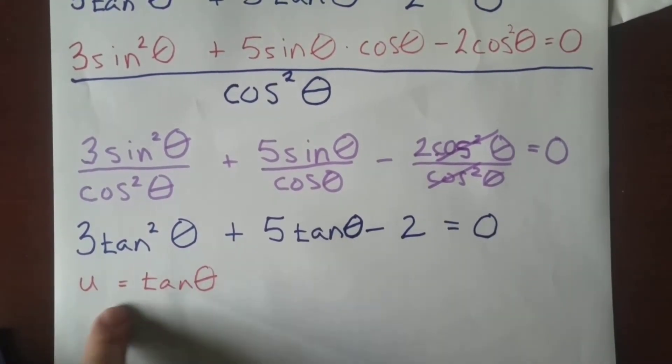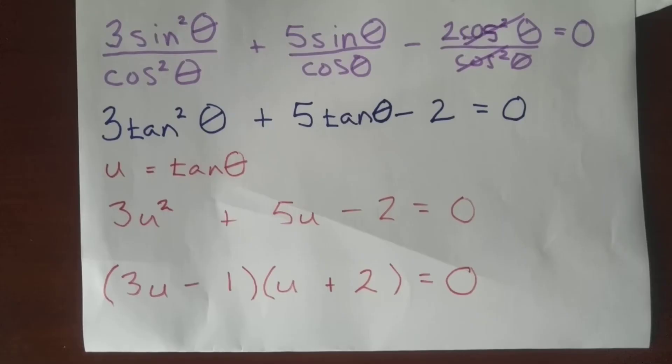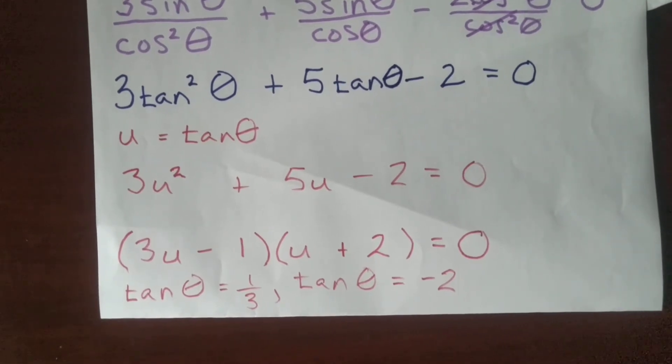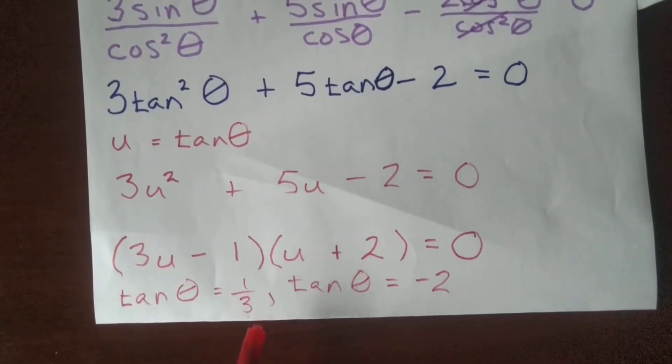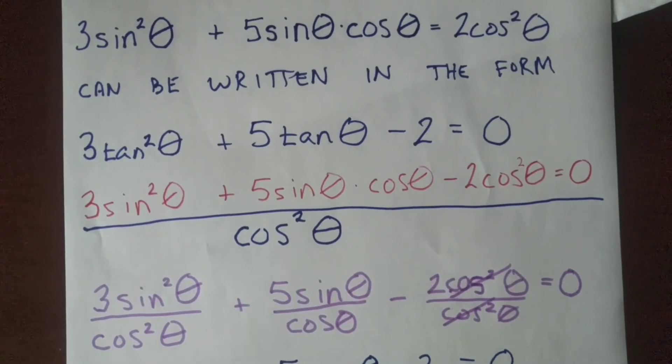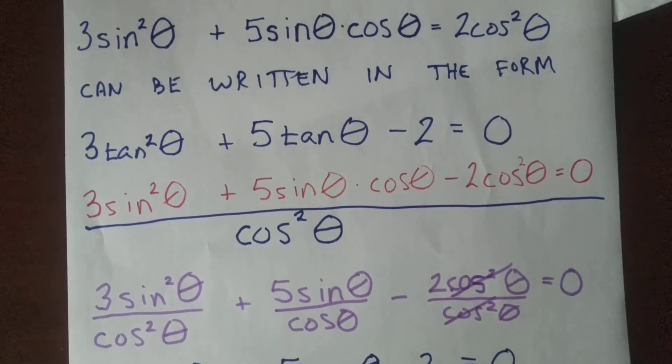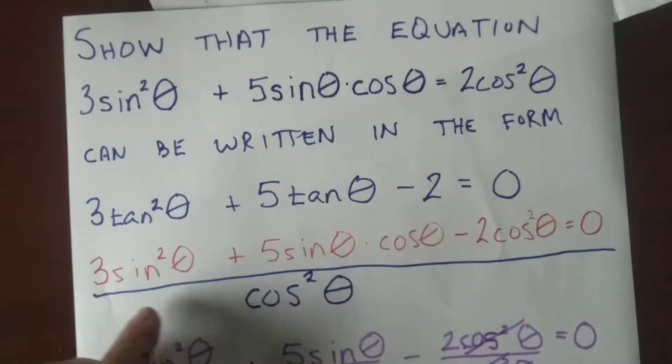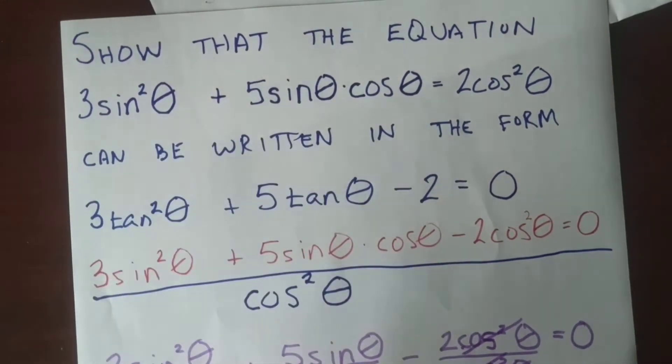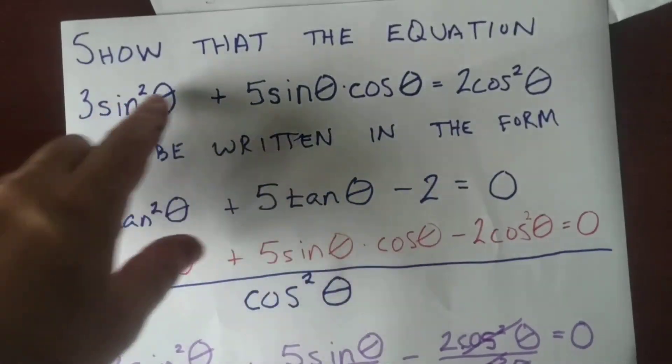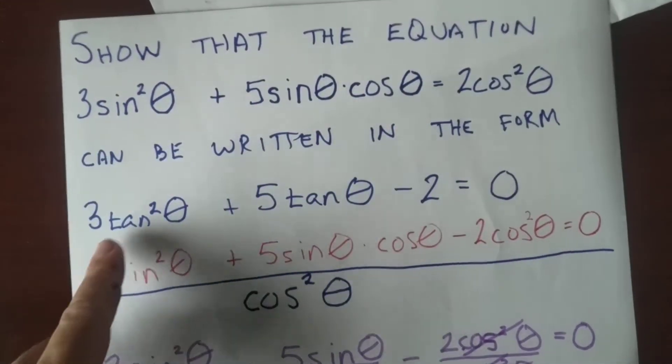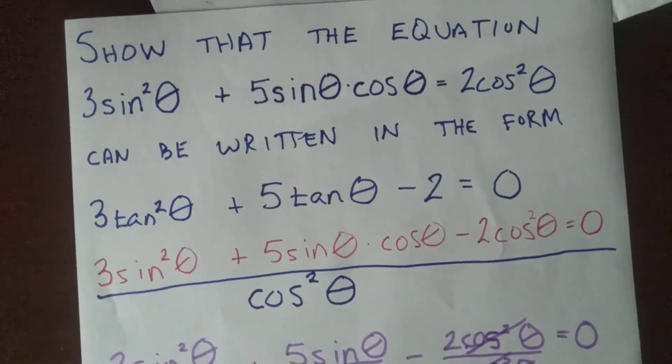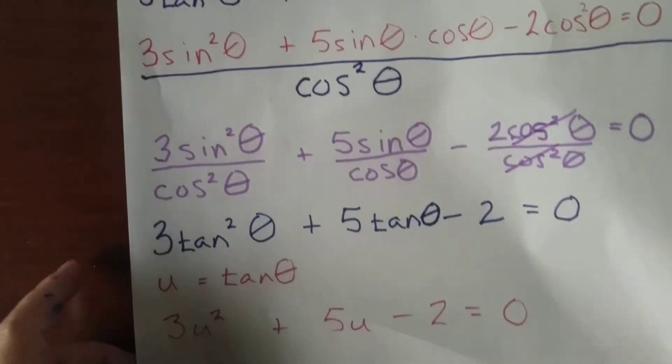And I'm going to use substitution. So factor and solve for tangent theta. And if I can back up, I realize that I went a little further than I probably should have and maybe you're a bit confused. So part A, there's a part A and a part B of this question. Part A is show that the equation, this equation is this, and we went through the process. So here is the answer.